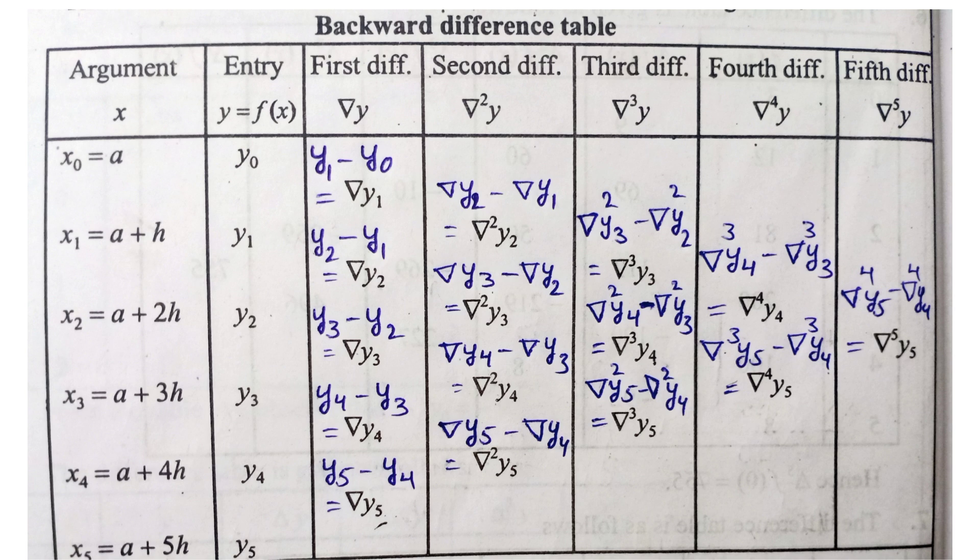Nabla square y2 relevant, nabla y2 minus y1. Okay, next nabla y3 minus y2, nabla square y3 value. Next nabla y4 minus nabla y3, nabla square y4. Nabla y5 minus nabla y4, nabla square y5. Okay, nabla square y values set clear.